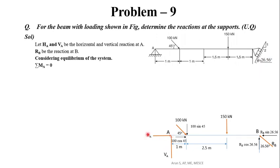HA and VA are passing through point A, so they produce no moment about A. Similarly, RB's horizontal component RB sin 26.56 also passes through point A, producing no moment. So the four forces that have zero moment about A are: HA, VA, 100 cos 45, and RB sin 26.56.